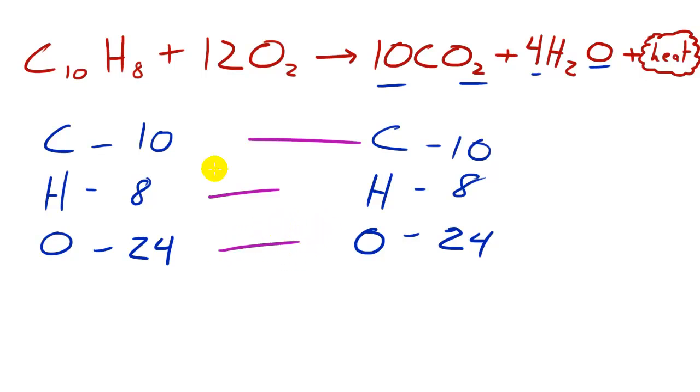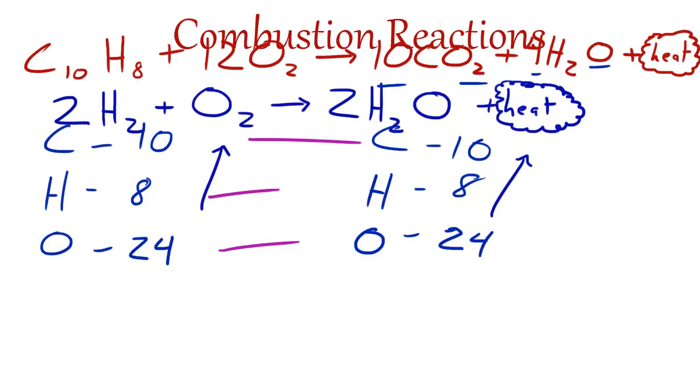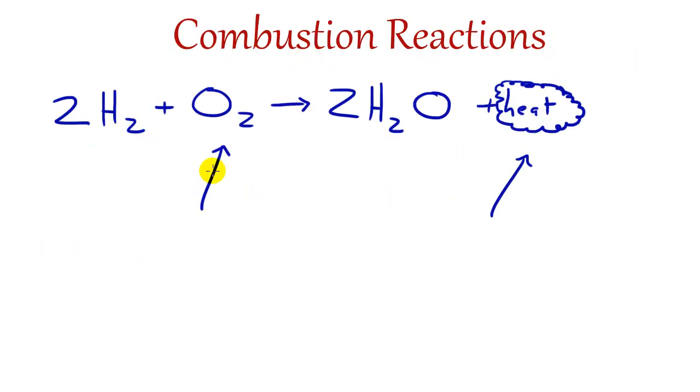So again just remember these are called combustion reactions and combustion reactions use oxygen and have heat as a byproduct which would make it exothermic chemical reactions. So anyways that's all you get for this tutorial. I know that you didn't really learn anything new just a couple new terms but the next tutorial I'm going to be jam packing you with a bunch of information. Thank you guys for watching, don't forget to subscribe, and I will see you guys later.